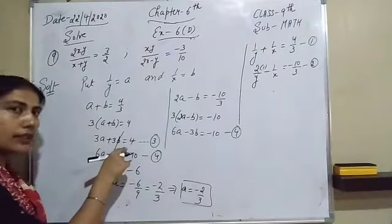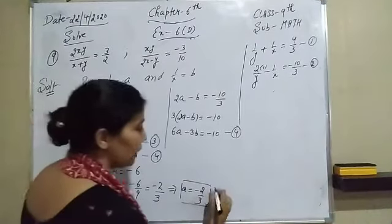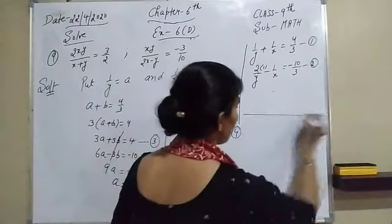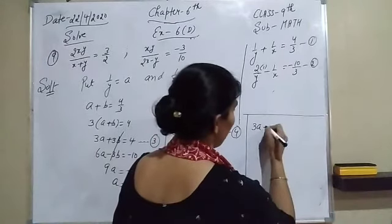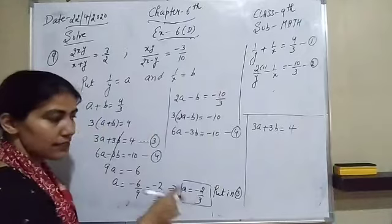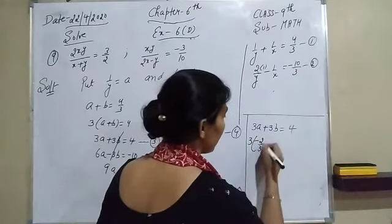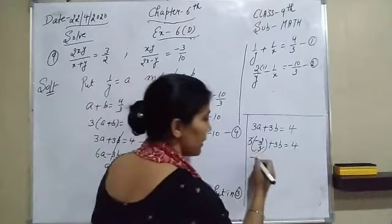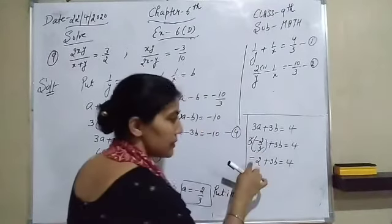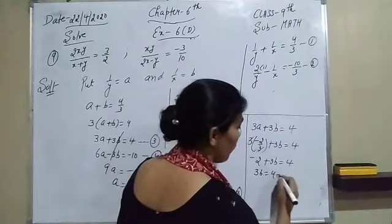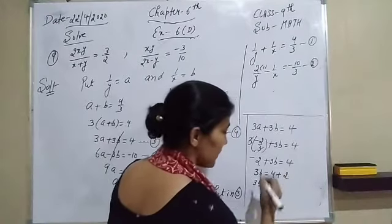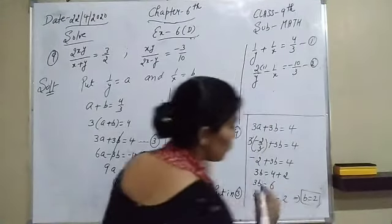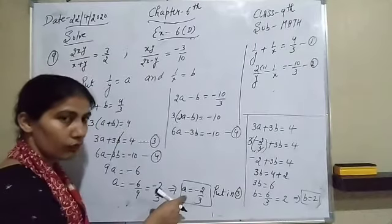Now we substitute a = −2/3 into equation 3 to find b. Equation 3 is 3a + 3b equals 4. So 3×(−2/3) + 3b equals 4, which gives −2 + 3b equals 4. Therefore 3b equals 4 + 2 equals 6, and the value of b is 6/3 equals 2.